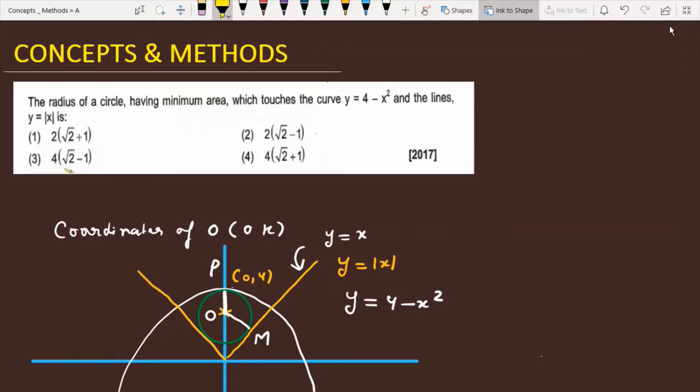The radius of a circle having minimum area which touches the curve y equals 4 minus x square and the line y equals mod x. So let's see how we will solve this problem.